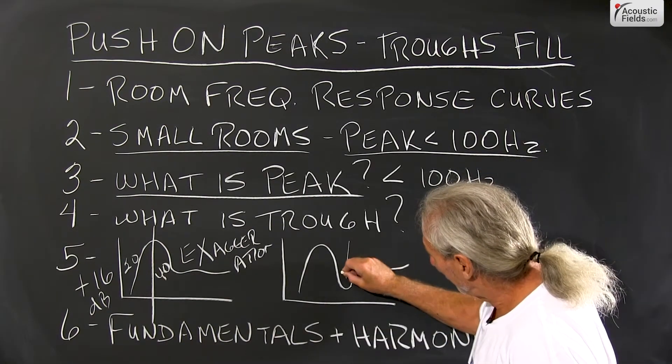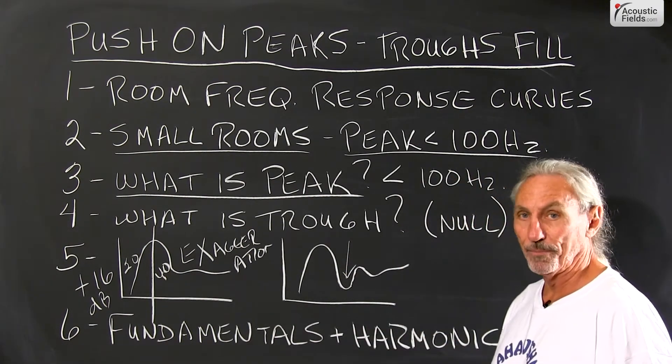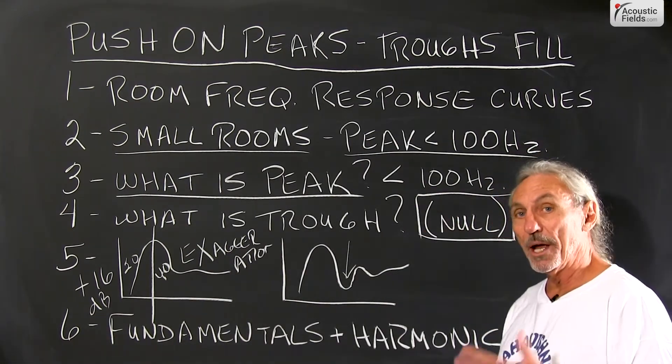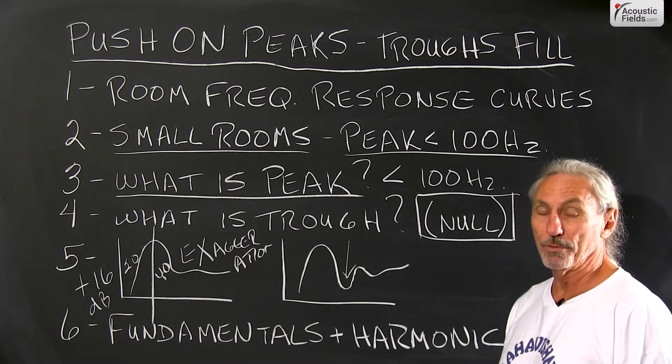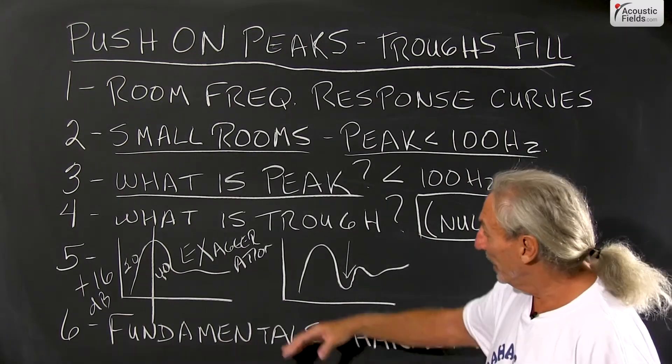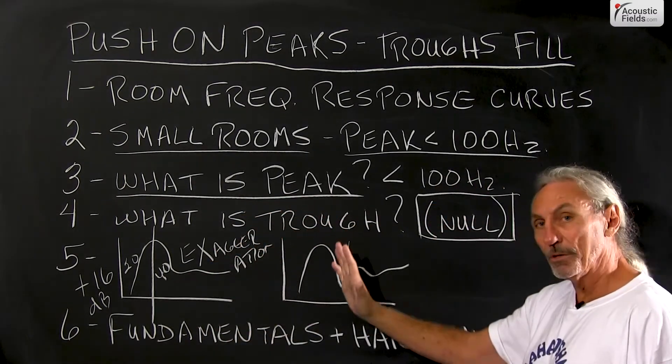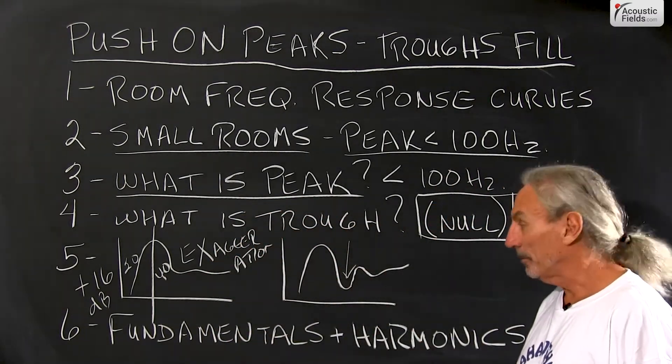Then we have our cousin the trough, or as we hear in the literature the null, which is an area void of certain frequencies. So we've got too much and we have too little. So we have this constant flow of too much and too little energy throughout the room.